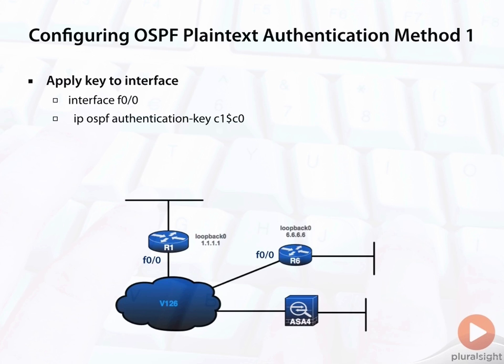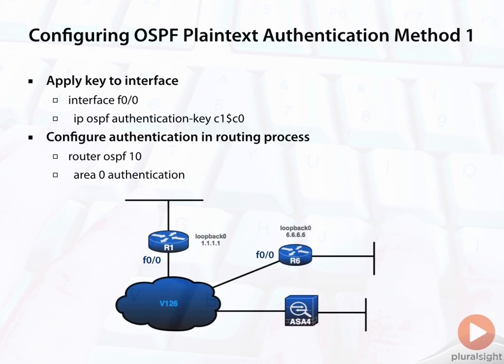The other side has to have the same key, so you may want to copy and paste and apply this on the other side. Next, configure the authentication within the routing process: go into router ospf 10 — which is our process ID for this router — and give it the area 0 authentication command.